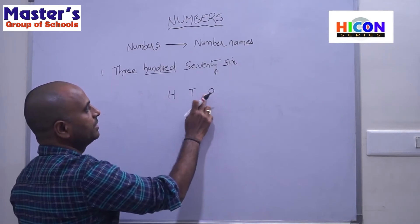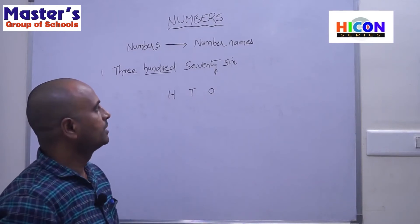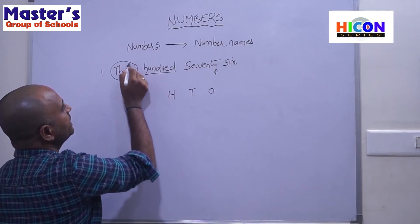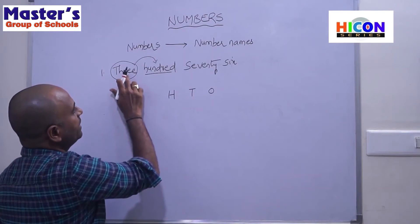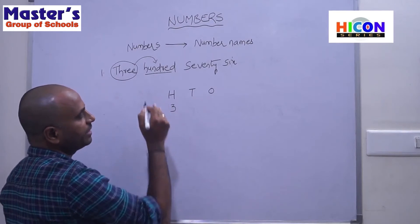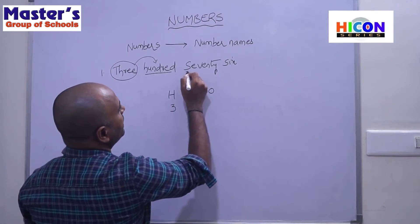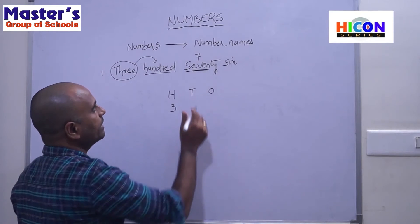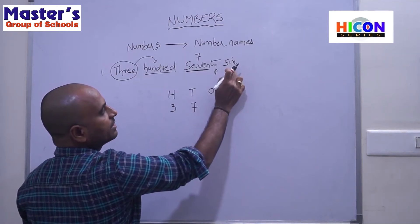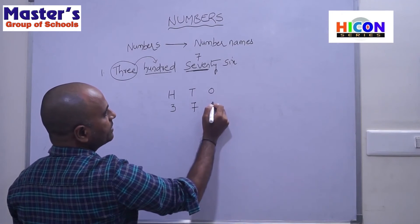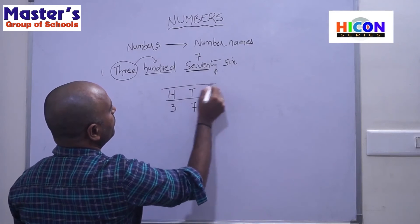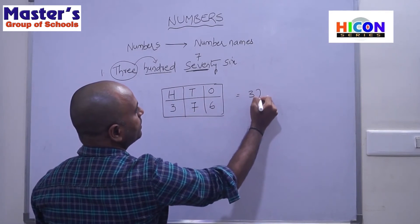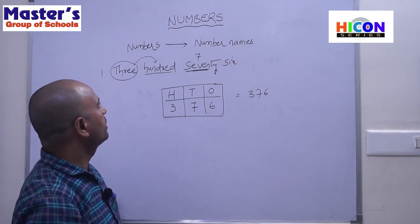Let us take the example: three hundred seventy six. Three is in hundreds place, so write 3 in hundreds place. Seventy means 7 is in tens place, so write 7 in tens place. Six is in ones place, so write 6 in ones place. So the number is 376. This is the way of writing a number from a number name.